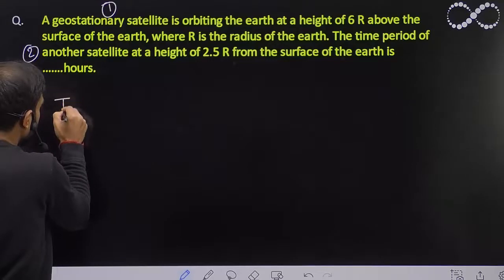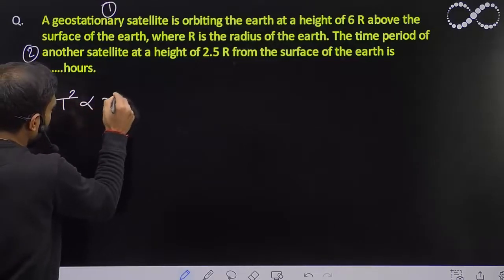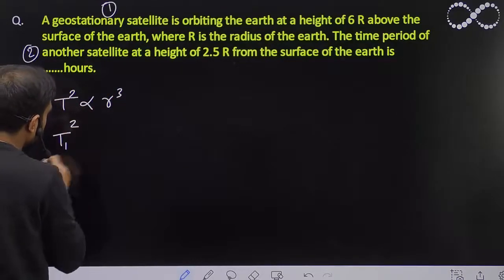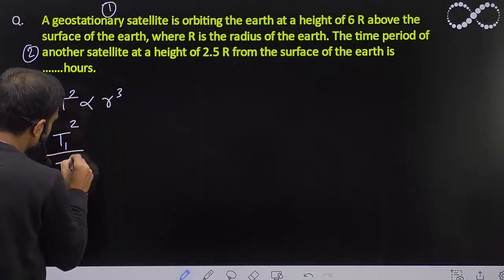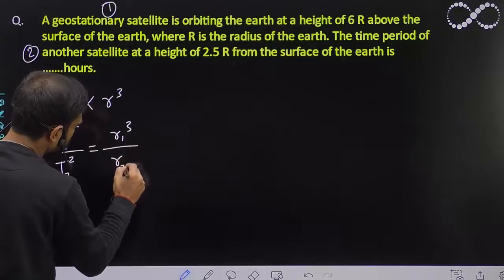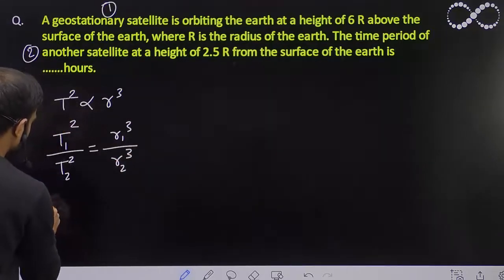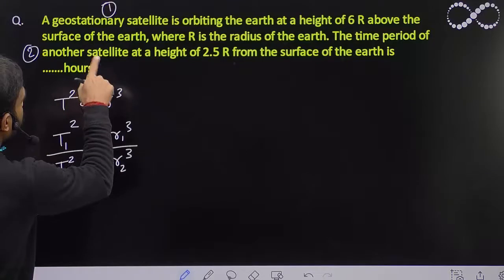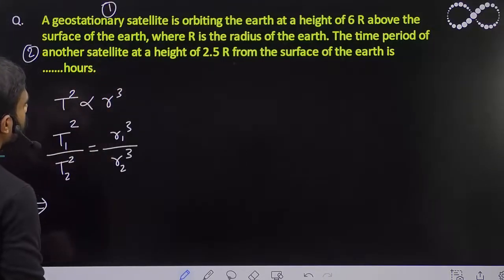As you all know, T squared is directly proportional to R cubed. I can say from here T1 squared upon T2 squared is equal to R1 cubed divided by R2 cubed. From here I can say the T1, that is time period of first one, that is a geostationary satellite.